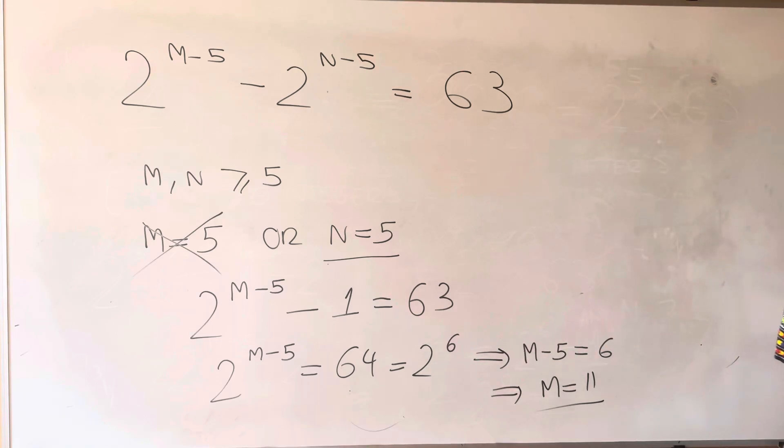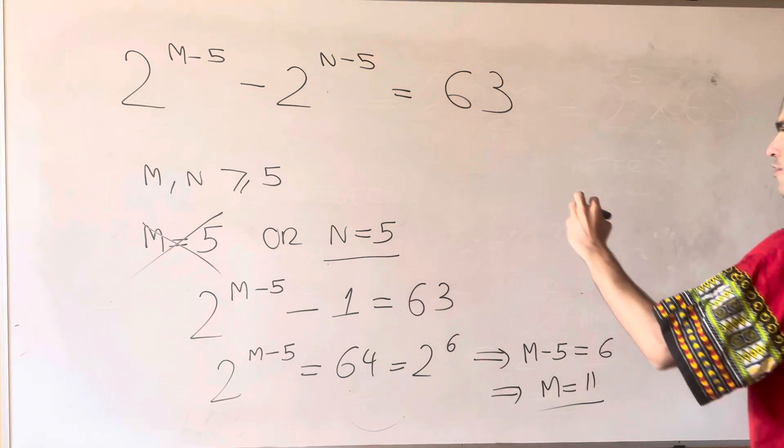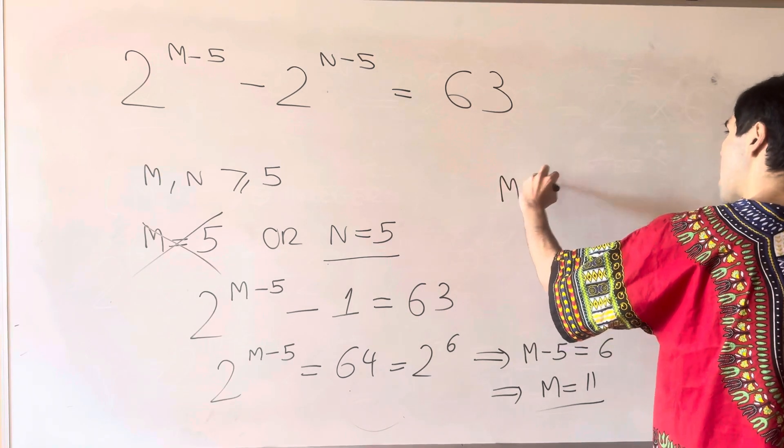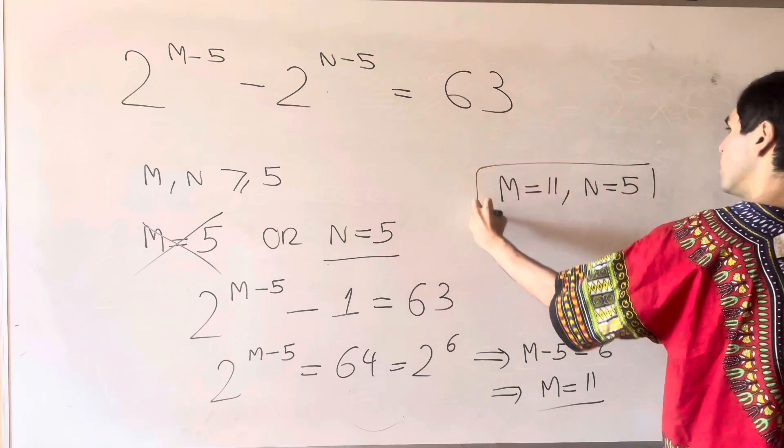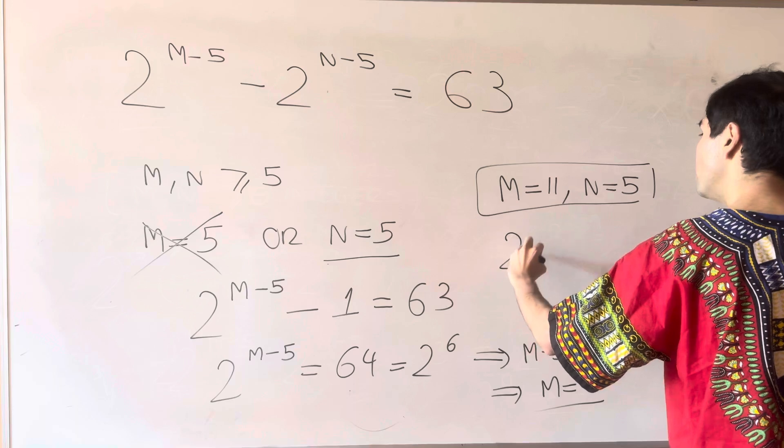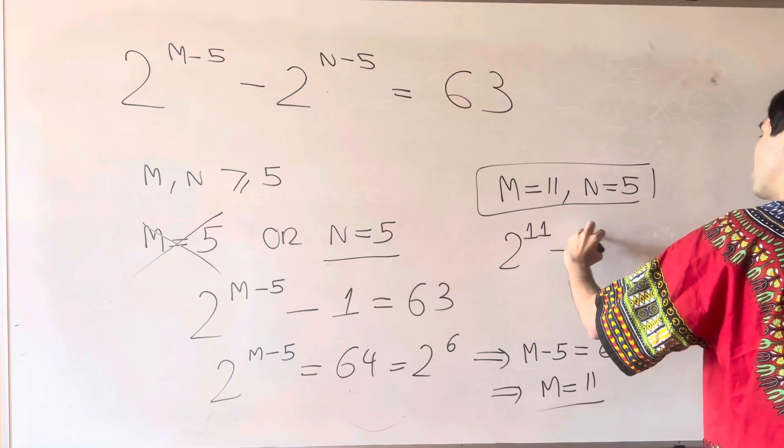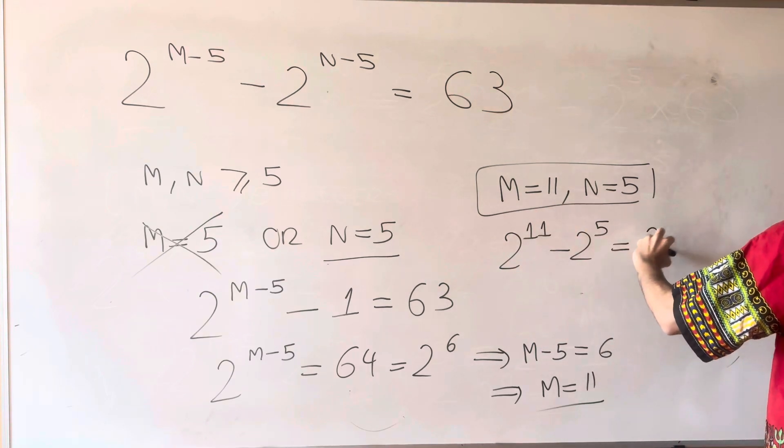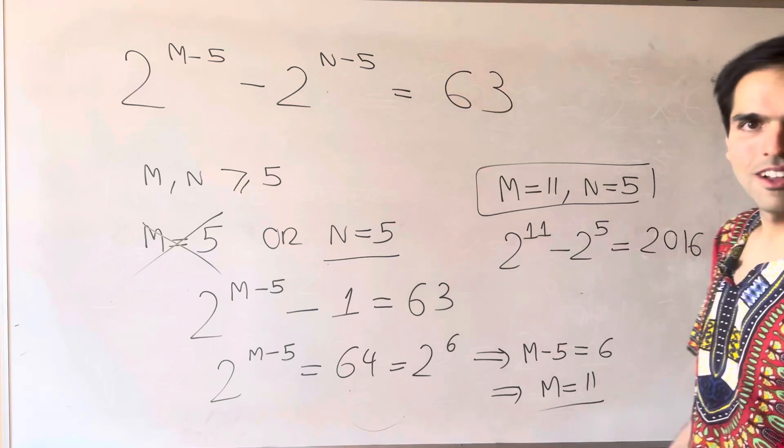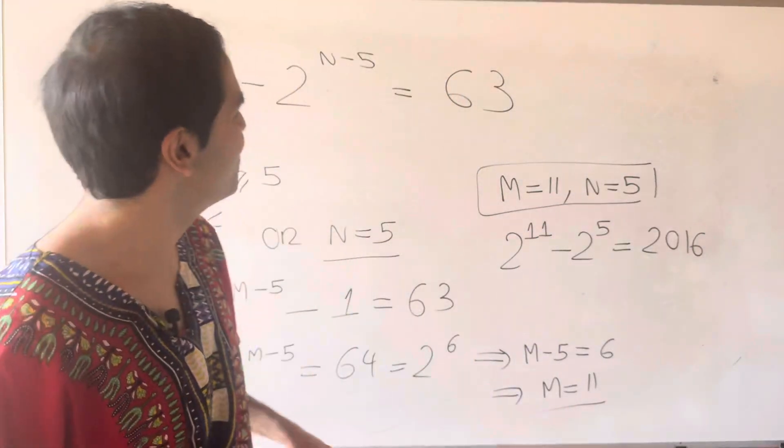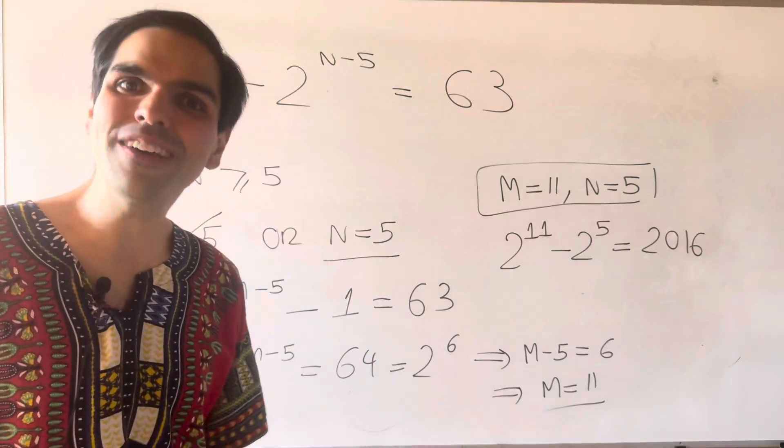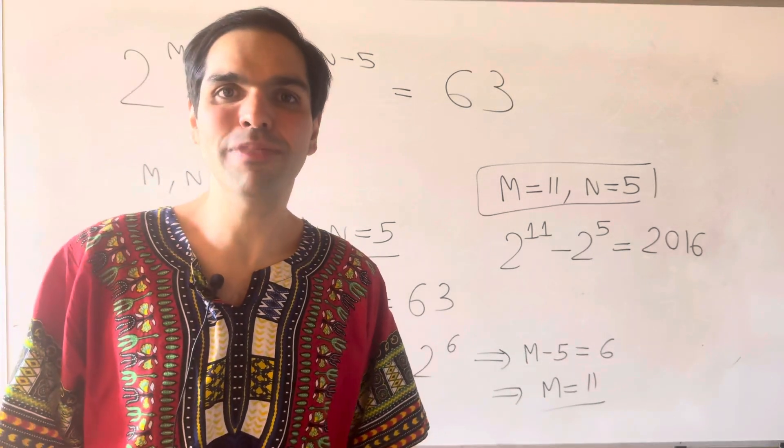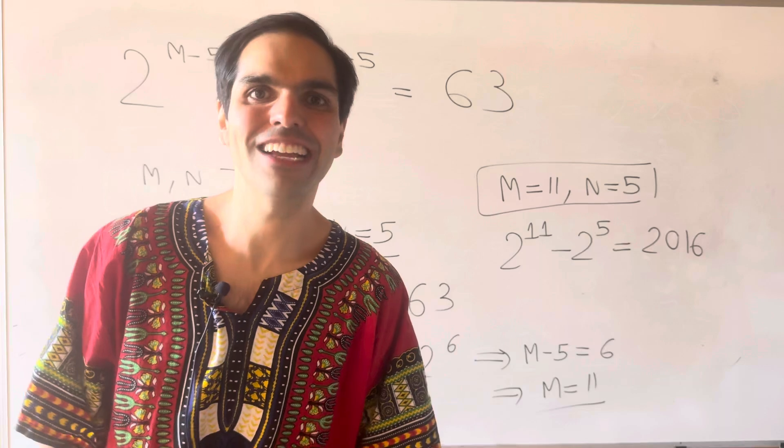So what is the final answer here? The only pair that really works is m is 11 and n is 5. And you can indeed check that 2 to the 11 minus 2 to the 5th is 2016, which by the way is the year I got my PhD in. Very, very cool. All right, I hope you like this. If you want to see more math, please make sure to subscribe to my channel. Thank you very much.